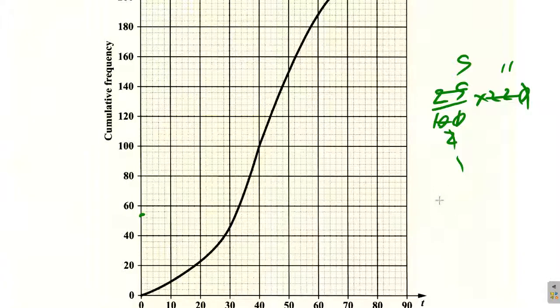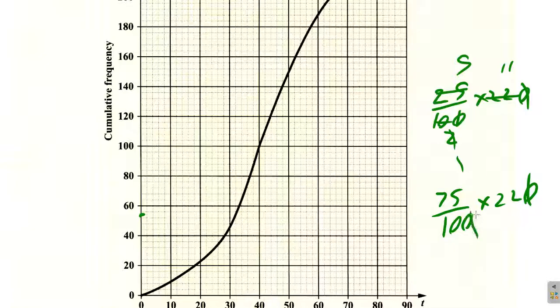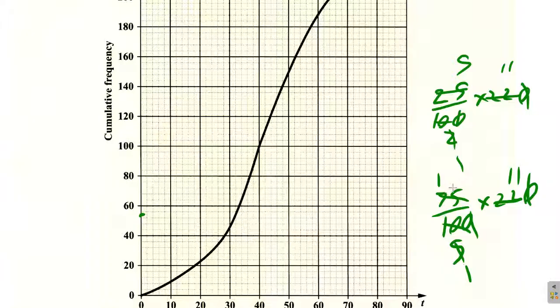Then 75% we want to identify. So 75% of 220, we cancel down. 15 multiplied by 11, that's 165. So we have 55, then 165 is about here.